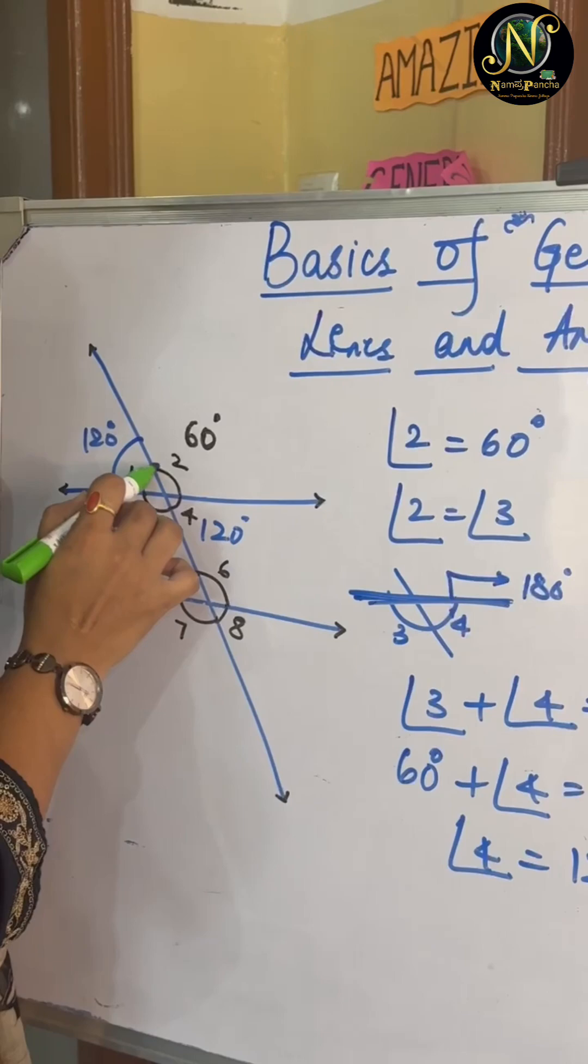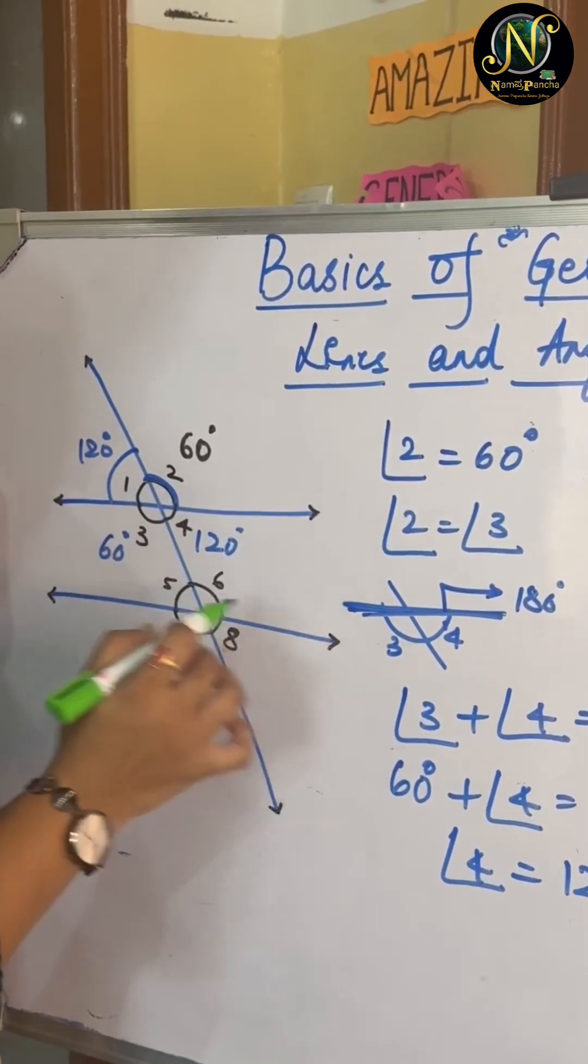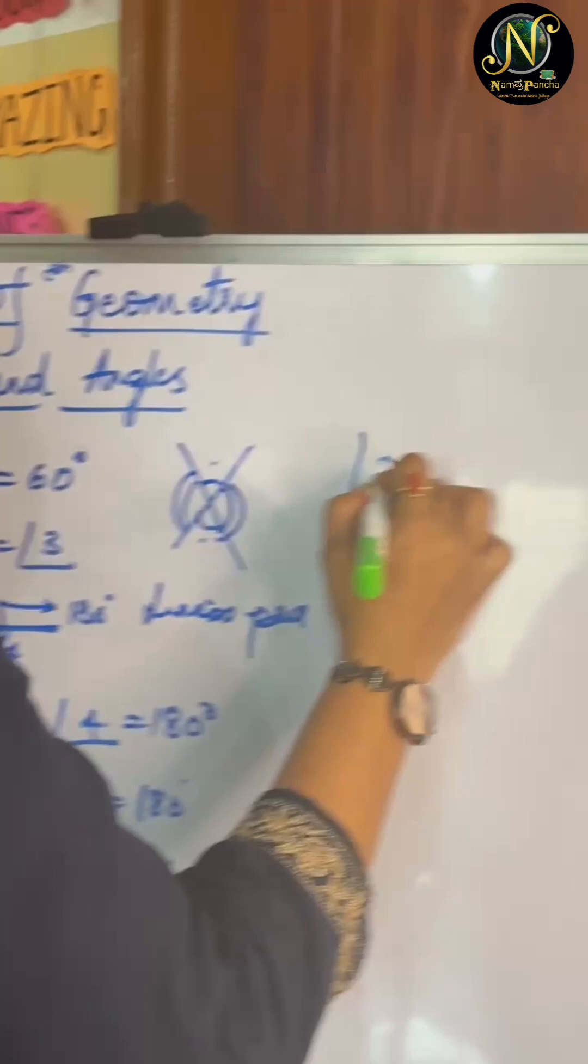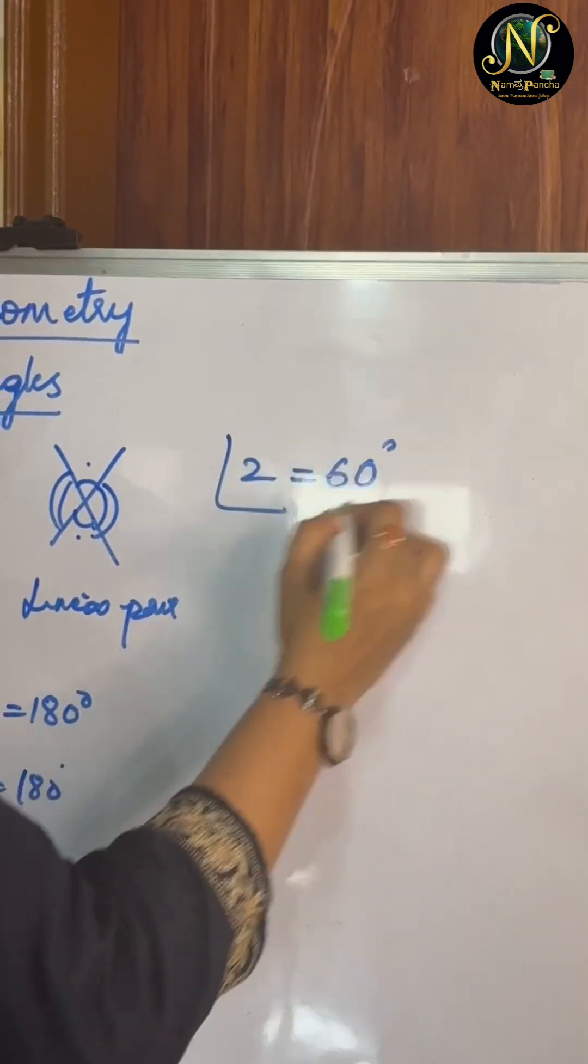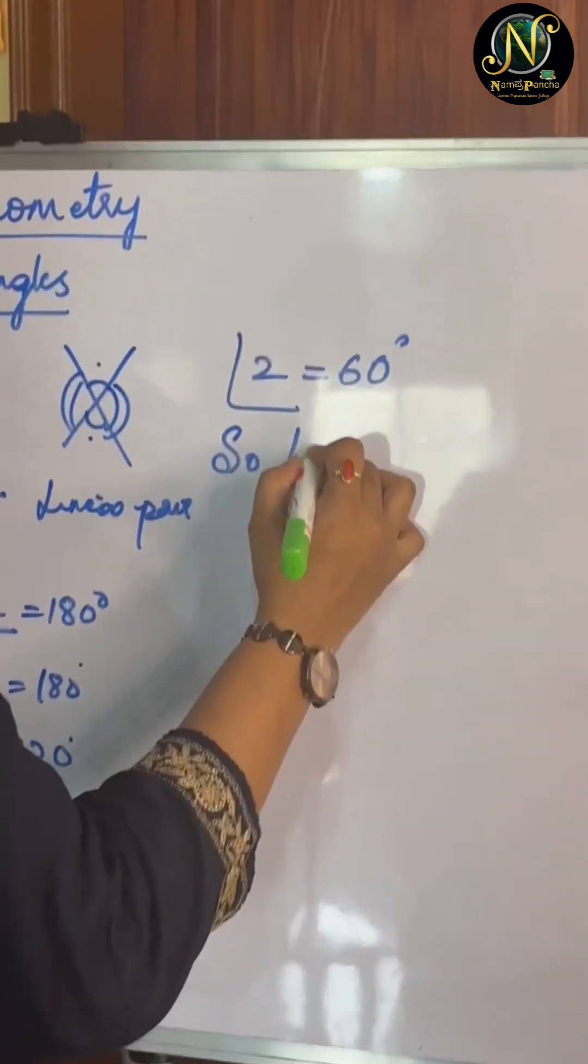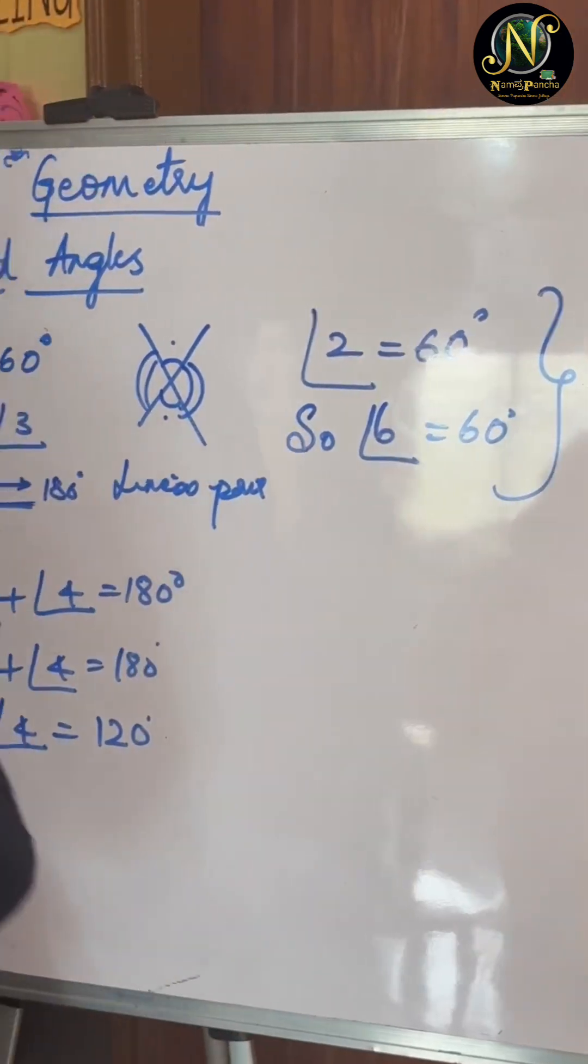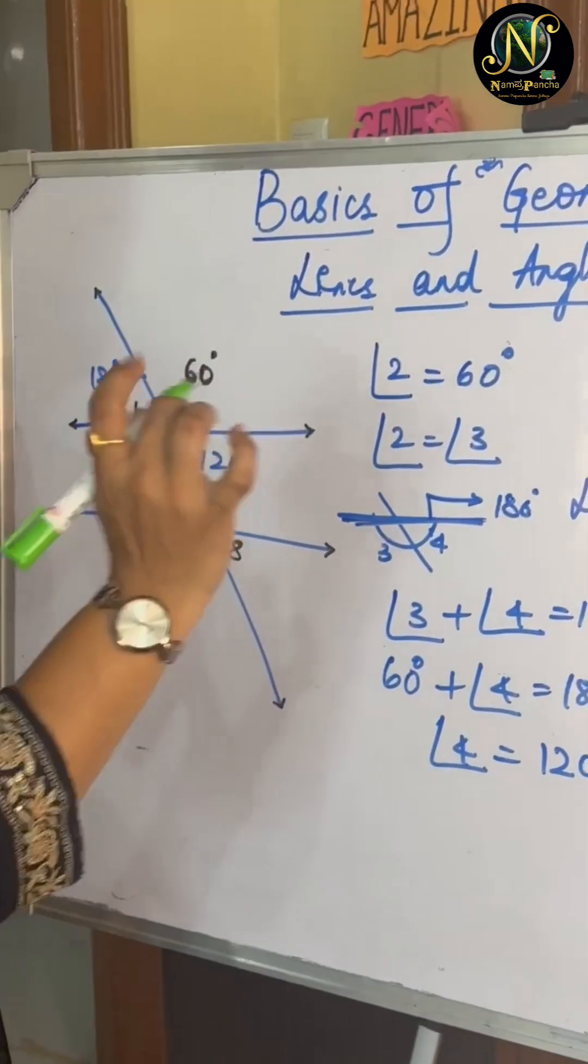Next concept. Since angle 2 is equal to 60 degrees, angle 6 also will be equal to 60 degrees. How is it? This concept is called as corresponding angles.